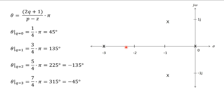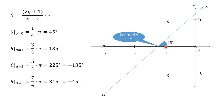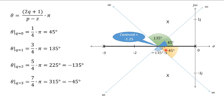We will darken that region on the real axis. The centroid is at −1.25, and from the centroid we draw the asymptotes: the first at 45°, the second at 135°. We do not need to draw the third and fourth separately because those correspond to −135° and −45°, which are the same lines going in the opposite directions.